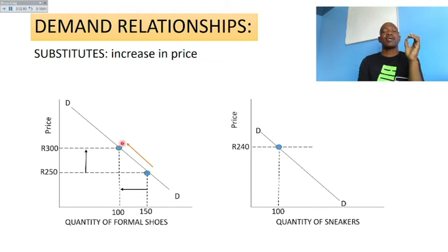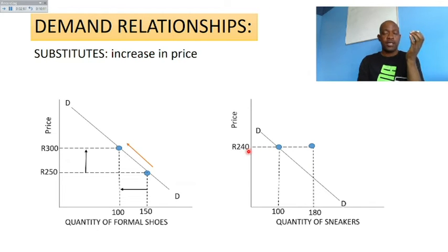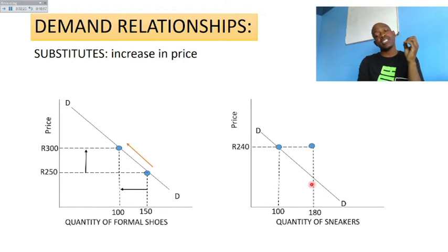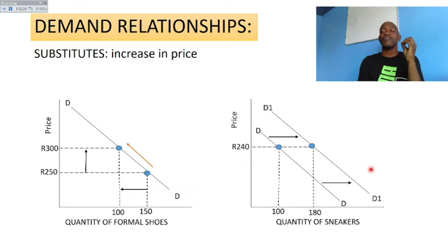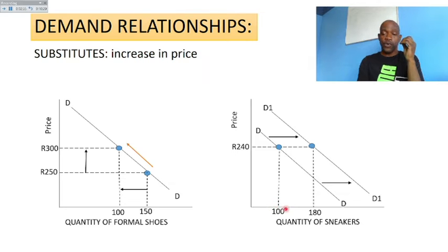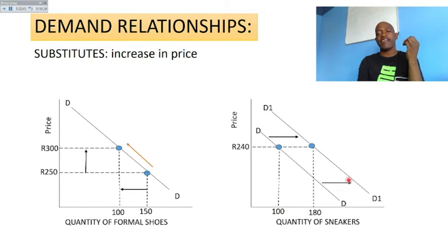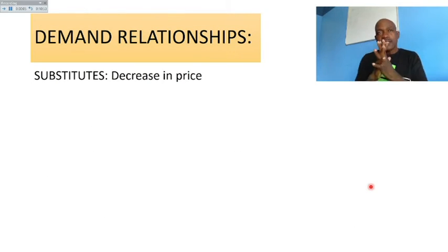Now, assuming that the price of sneakers did not increase, some people can no longer afford to buy formal shoes, so the quantity demanded for sneakers will increase. This causes a shift of the demand curve from D to D1 — a change from 100 to 180 sneakers. There is a rightward shift of the demand curve from D to D1.